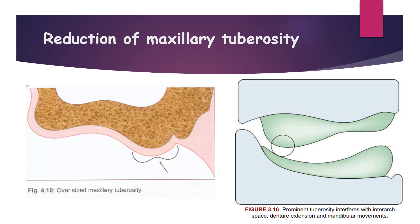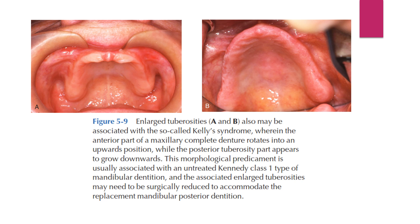An enlarged tuberosity may also be associated with Kelly's syndrome, wherein the anterior part of the maxillary complete denture rotates into an upward position while the posterior tuberosity part appears to grow downwards. This morphological predicament is usually associated with untreated Kennedy Class I mandibular dentition. Associated enlarged tuberosities may need to be surgically reduced to accommodate the replacement mandibular posterior dentition.